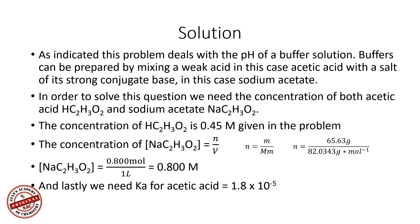We will also need the Ka value of acetic acid, which is given as 1.8 × 10⁻⁵. We can convert this to the pKa value, which is negative log(Ka) = negative log(1.8 × 10⁻⁵), which equals 4.74.